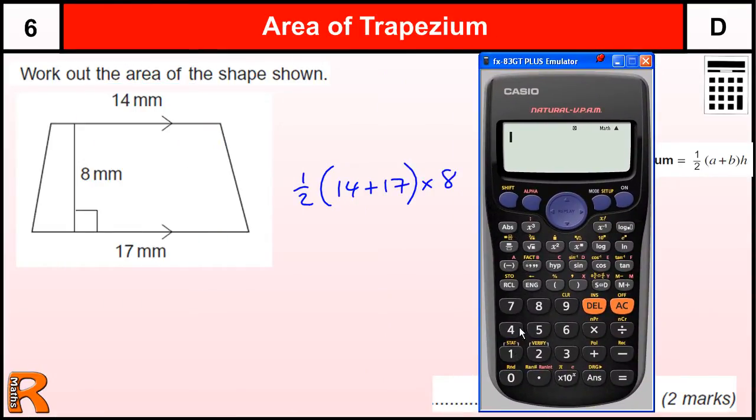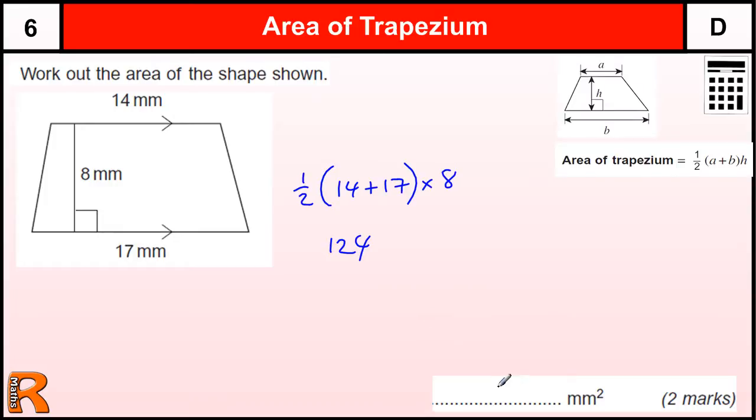So we've got a half, we can use the fractions there if we want, or we could put 0.5 if we wanted to, but 14 plus 17 in a bracket, and then times by the 8 gives you 124. Two very straightforward marks.